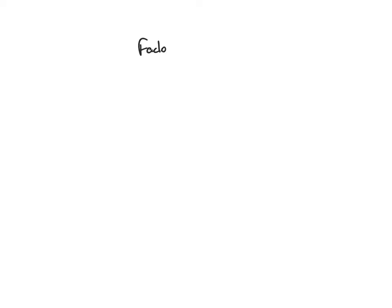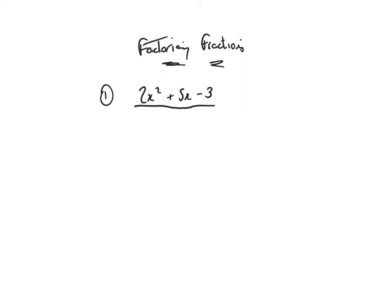We're going to look at some more examples of factorising fractions. Remember, factorise top and bottom and see if you can cancel something. So today let's look at Example 1: 2x squared plus 5x minus 3 divided by 16x minus 8.